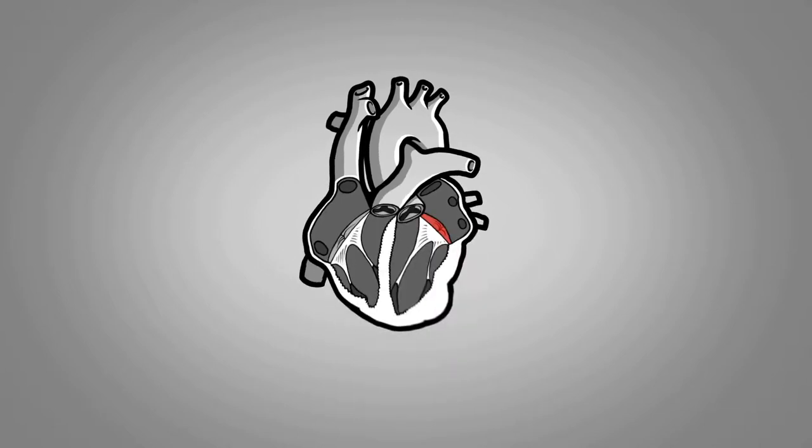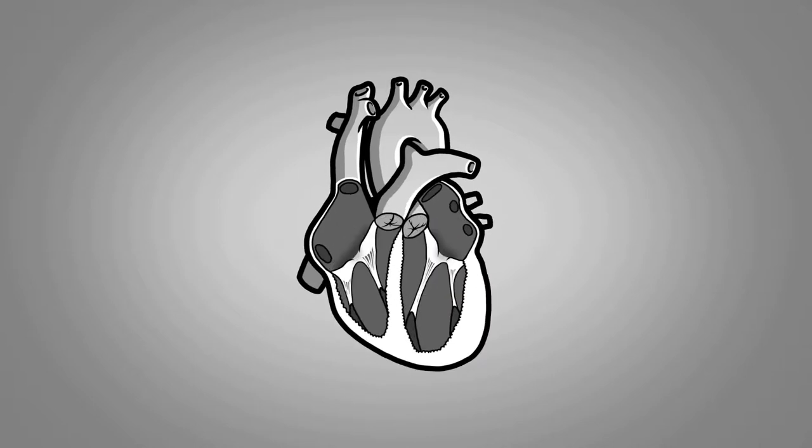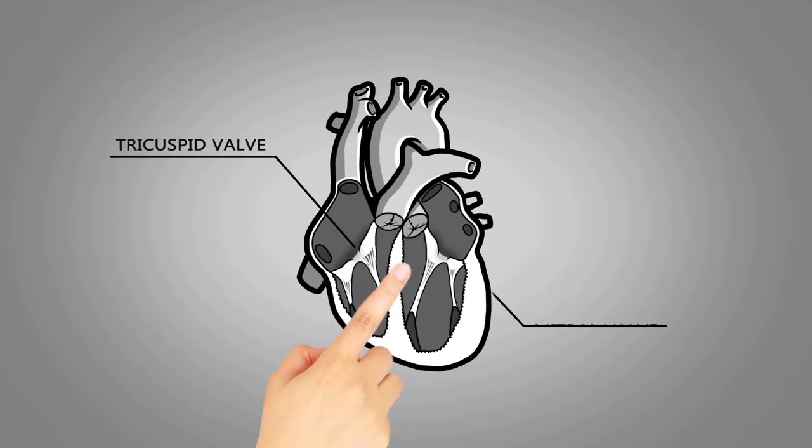The heart has two valves separating the ventricles from the atria. These are the atrioventricular valves. On the right side, we find the tricuspid valve, and on the left side, the mitral valve.